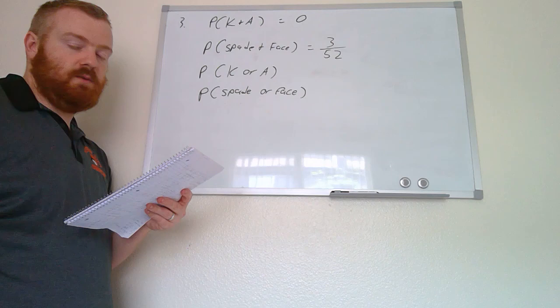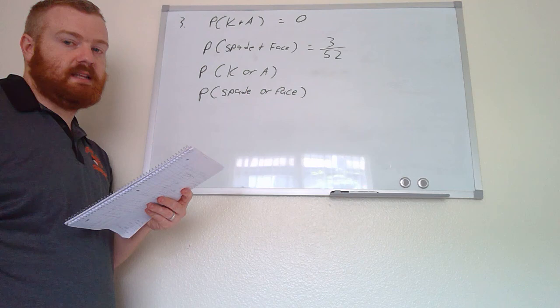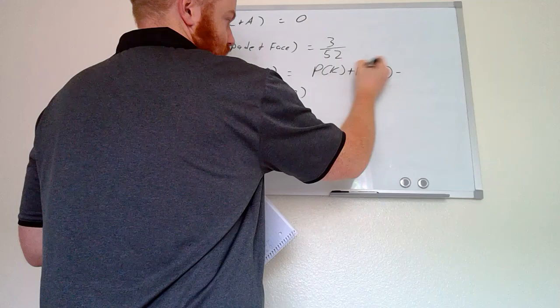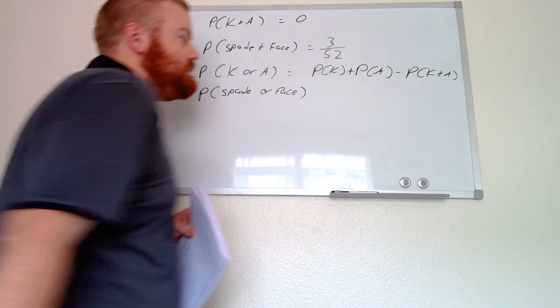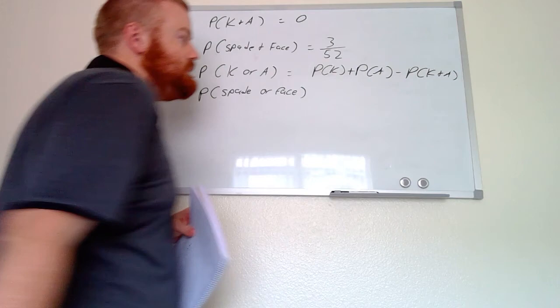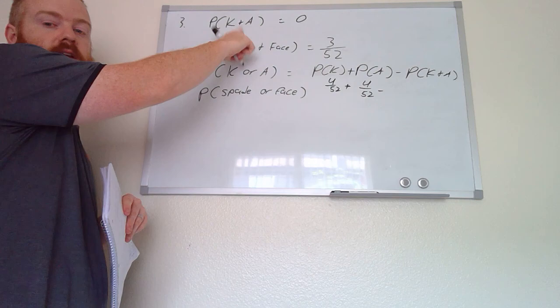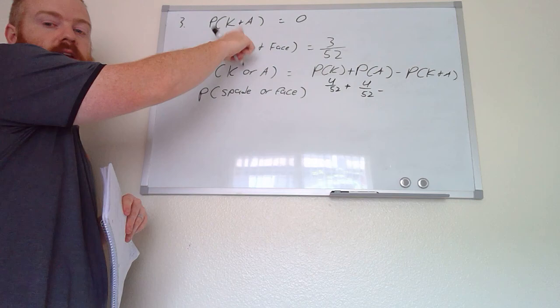For the probability of a king or an ace, when we see the word 'or' we add together the individual probabilities and subtract the probability of both occurring. So we have: probability of a king (4/52) plus probability of an ace (4/52) minus probability of both a king and an ace (which is 0, since we established that's impossible). Combining these gives us 8/52.